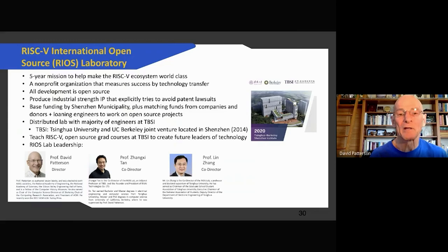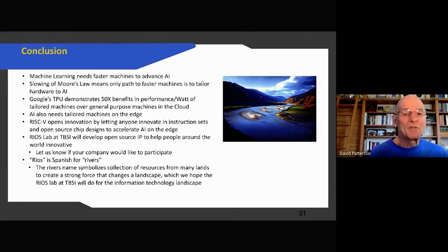Machine learning needs faster machines to advance artificial intelligence, and this is being done with machine learning and deep neural networks. With Moore's Law slowing down, the only way we're going to do this is domain-specific architectures. Google's TPU v1 demonstrated you get factors of 50 of performance per watt over general-purpose computers, which is a very exciting result. And besides in the data center, we're going to need these domain-specific architectures on the edge as well. RISC-V is a boon to doing domain-specific architectures because it gives you a standard instruction set that you can enhance, add your secret sauce for your applications. The RIOS Lab at TBSI in Shenzhen is going to develop open source IP that everyone can use to help you build these chips.